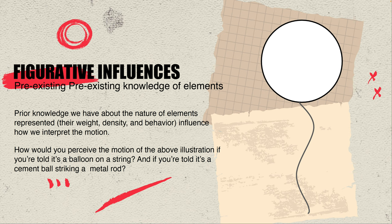Figurative influences involve prior knowledge or context of an object. Preexisting knowledge about the nature of elements — their weight, density, and behavior — can influence how we interpret motion. If we look at a shape as a balloon, we get a sense of a floating, light, airy object going upward. Or if we picture it as a cement ball hitting a metal rod, we get the opposite sense: a large heavy object compressing another. Depending on context, there are two very different readings.